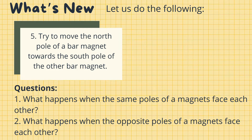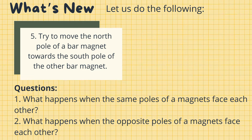After doing the activity, what have you observed? Let's answer the following questions. What happens when the same poles of a magnet face each other? The answer is, when the same poles face near each other, they will repel or push each other away. What happens when the opposite poles of a magnet face each other? The answer is, when the opposite poles face near each other, they will attract or pull each other together.